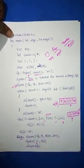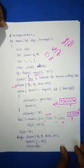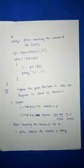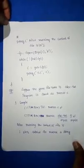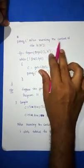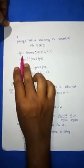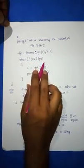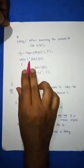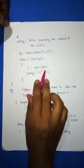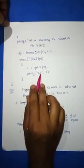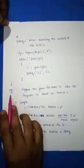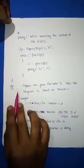To display the output, print "after reversing the content of file is", then open the same file again for reading. Check while it is not equal to EOF: c = getc(fp), then printf("%c", c). This prints every character in the file, showing the reversed portion followed by the rest of the content.